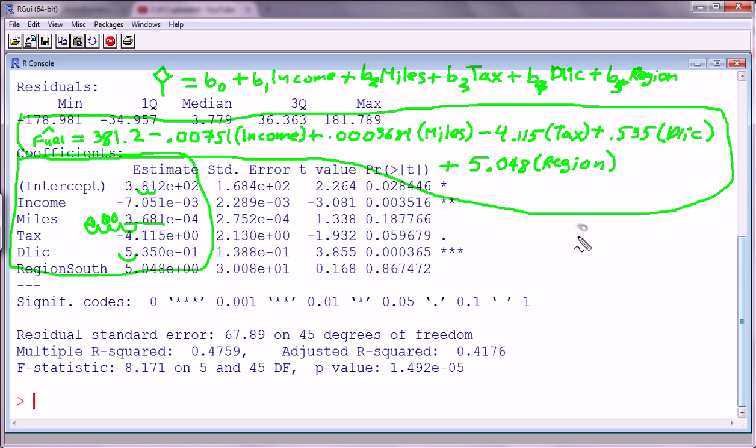Now, one extra thing to mention here. All these features were numerical except region. If you recall, region was a categorical variable that was either north or south, so it was binary. So region actually, R handles that by creating a dummy feature. So the dummy feature here says that if the region is south, it adds this much to fuel consumption. And if it's north, this basically is zero and this just disappears. So this is either one or zero.